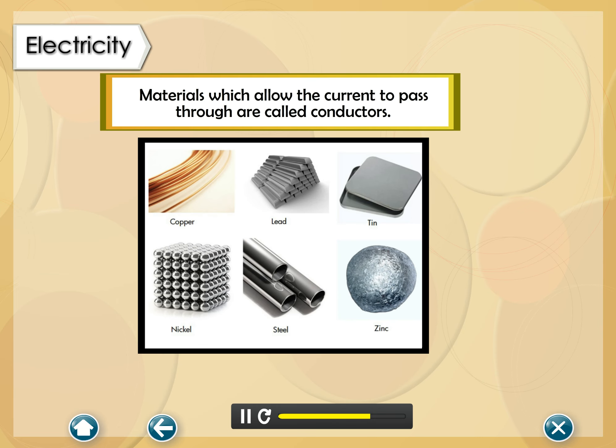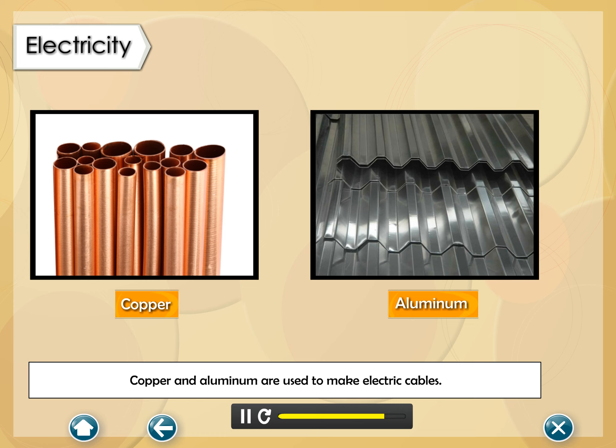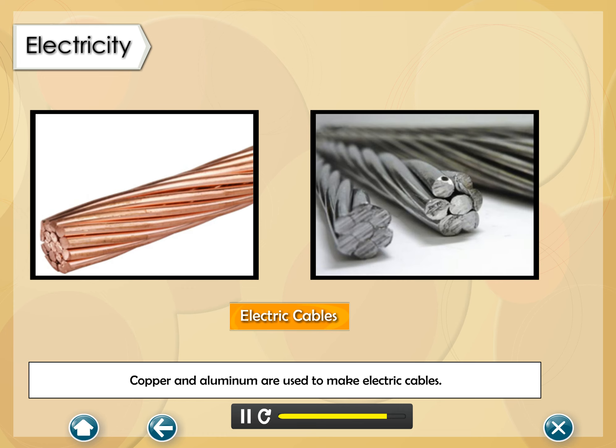Materials which allow the current to pass through are called conductors. All metals are good conductors. Copper and aluminium are used to make electric cables.